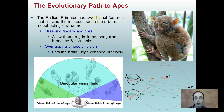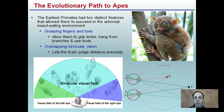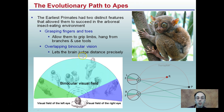The earliest primates have two distinctive features that allowed them to succeed in this arboreal, insect-eating environment: grasping fingers and toes, and overlapping binocular vision. You can see evidence of grasping fingers and toes to climb limbs, hang from branches, and use tools. The overlapping binocular vision, using two eyes, lets the brain judge distance precisely.